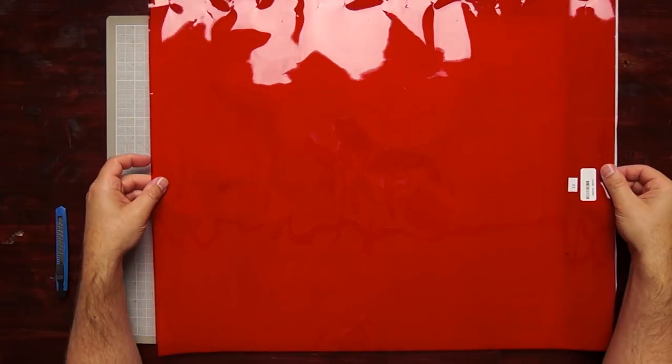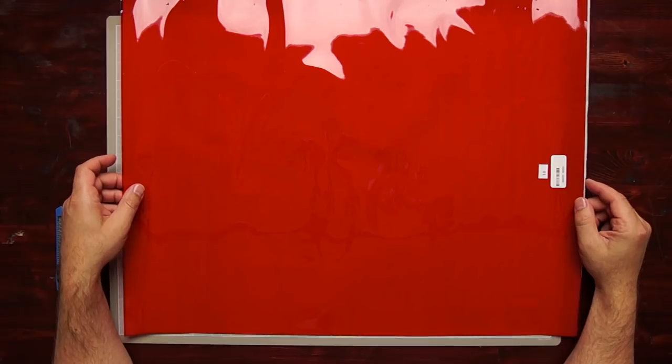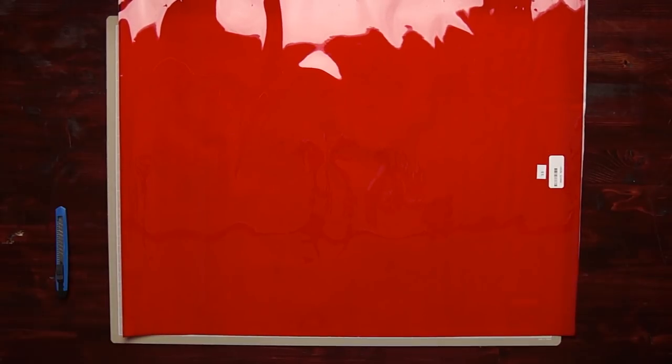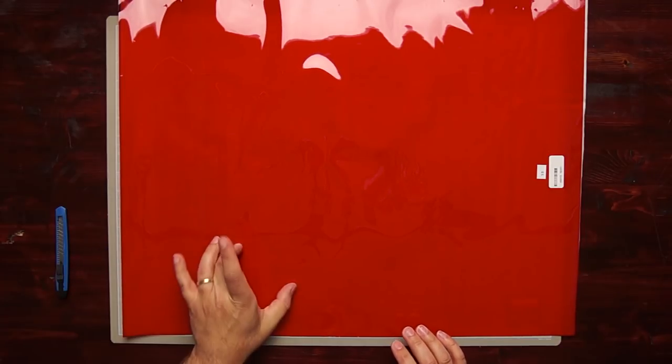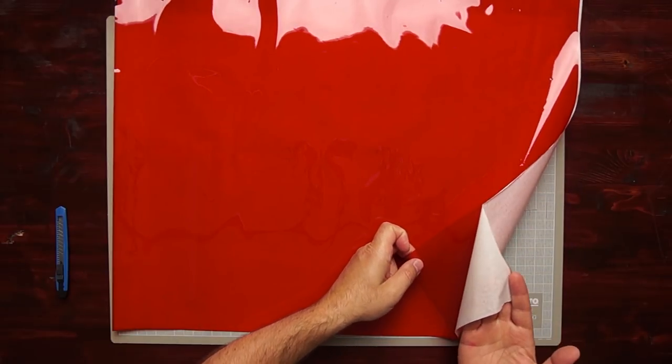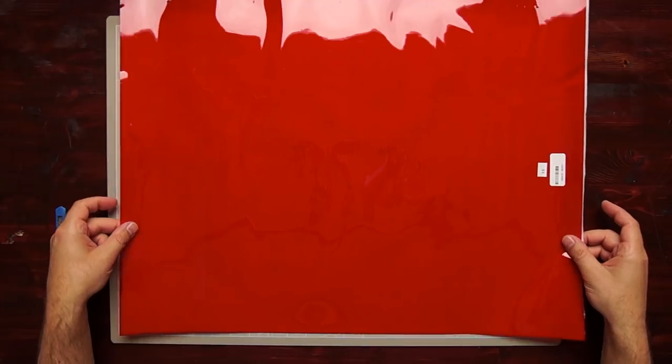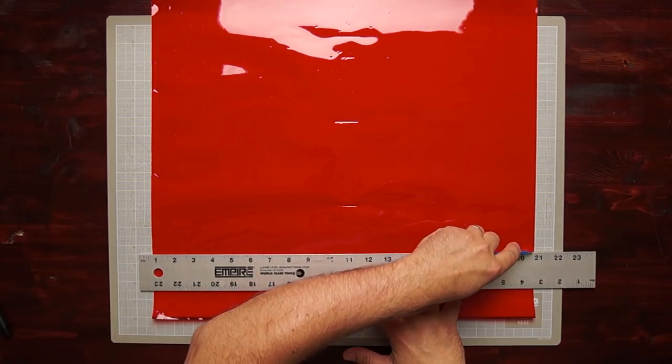We're going to need Rosco number 19 or Fire Red. The red-taped filter for ortho material in black and white is going to use two pieces of the red and one piece of the white vellum that it comes with.